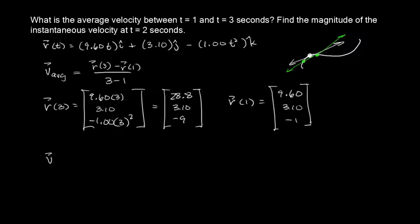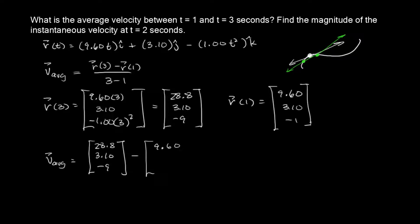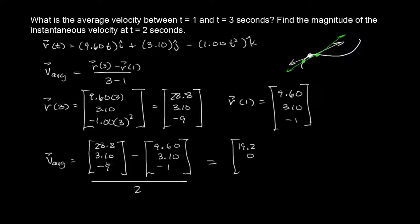Three minus one is two. So for v average, we take R(3) minus R(1) all over two. That gives us: 28.8 minus 9.60 equals 19.2 for the first component; 3.10 minus 3.10 equals zero for the second; and negative nine minus negative one equals negative eight for the third. All over two.